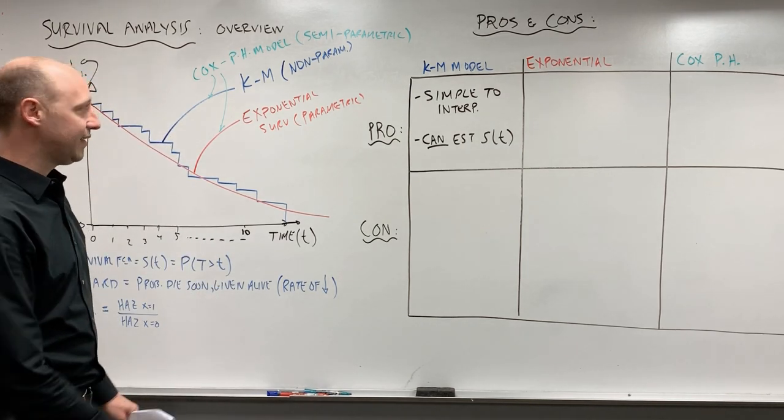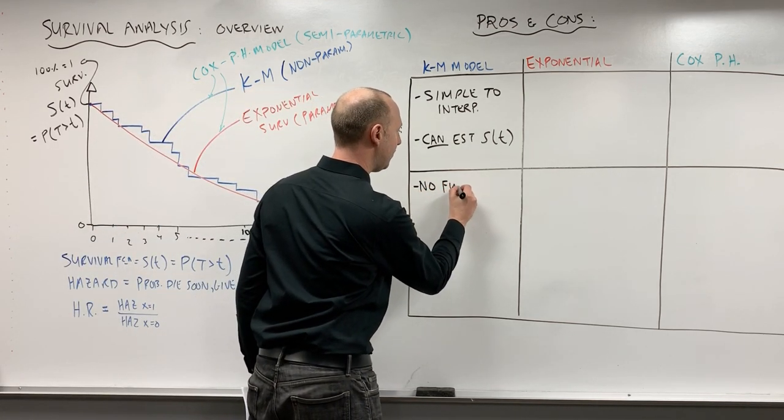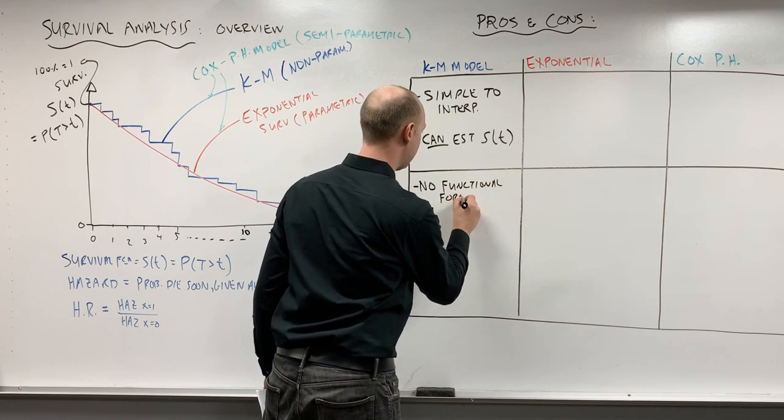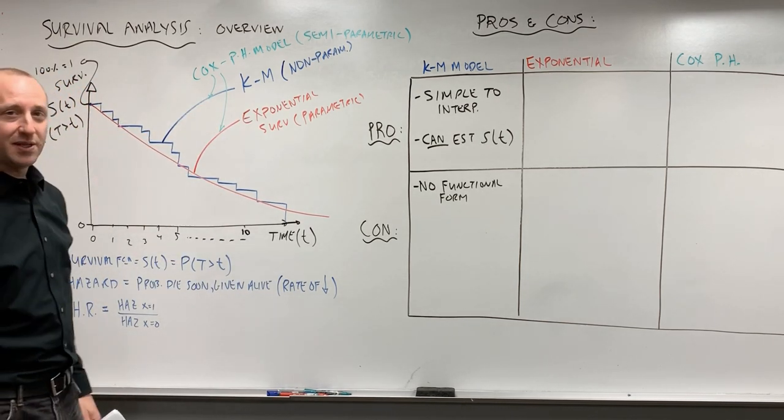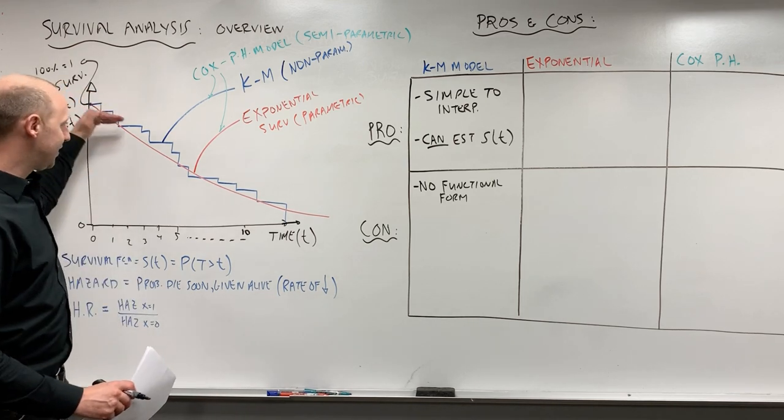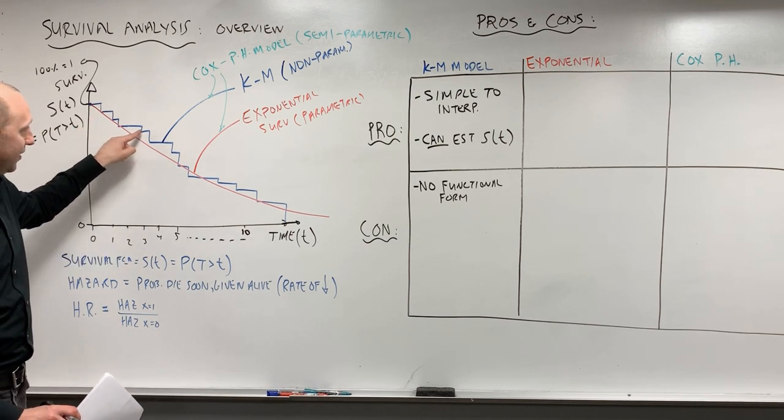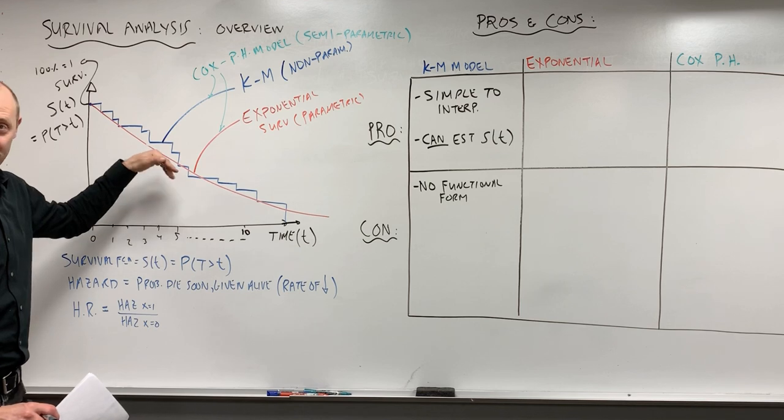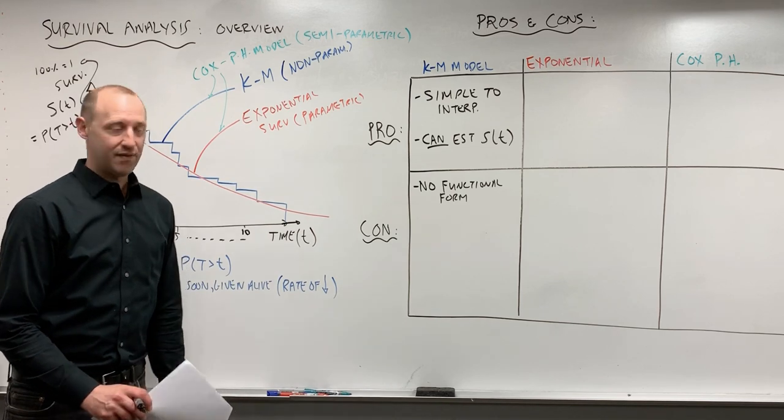Some of the cons or negatives. The first is that there's no functional form. What I mean by that is, you can see this kind of blue set of steps here, there's no simple mathematical function that describes the shape of these. The only way to describe the set of steps is to tell someone every time it steps down and how much it steps down.